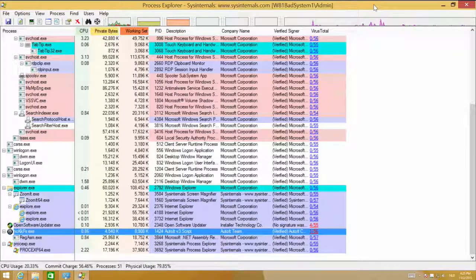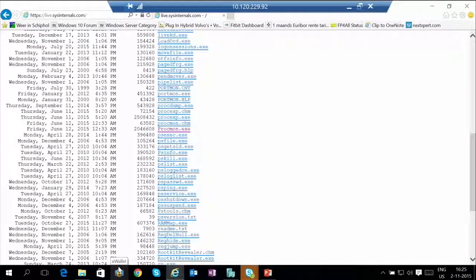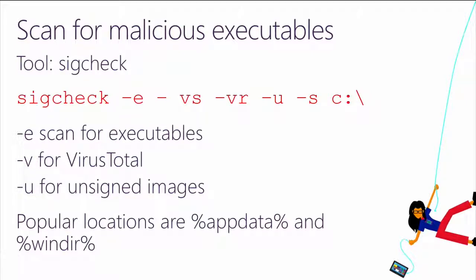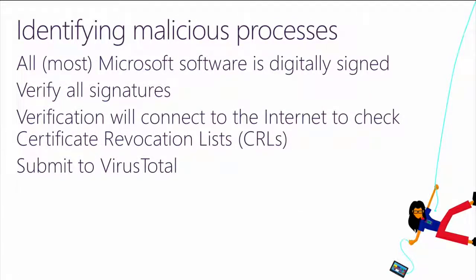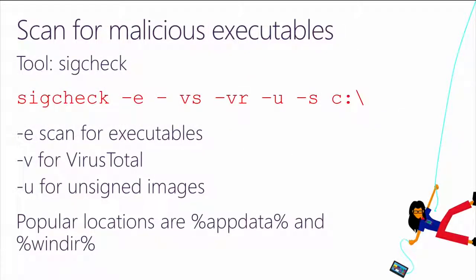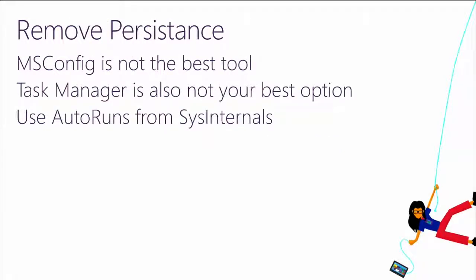The next thing to look for is: are these processes being automatically started? If you want to know if a program is automatically started, there are a couple of tools you can use. You can use msconfig, but msconfig has a limited number of locations in Windows that you can search for automatically starting files. Task Manager is also limited in the number of locations it can search.